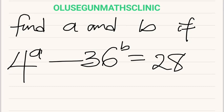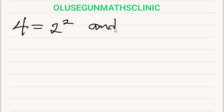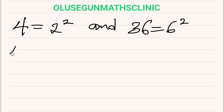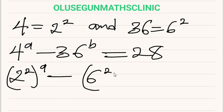Find A and B. If 4 raised to power A minus 36 raised to power B is equal to 28, recall that 4 is equal to 2 squared and 36 is equal to 6 squared. Therefore, 4 raised to power A minus 36 raised to power B, which is equal to 28, can be written as 2 squared raised to power A minus 6 squared raised to power B is equal to 28.